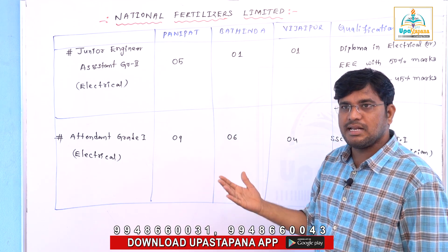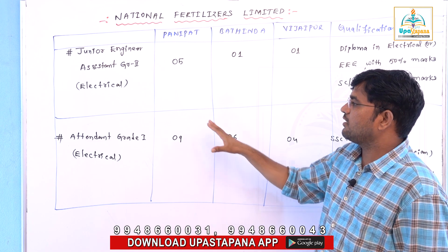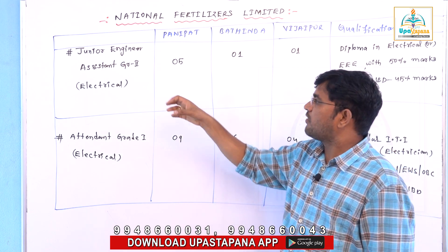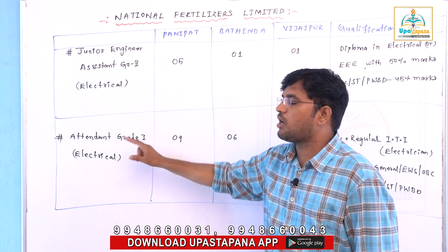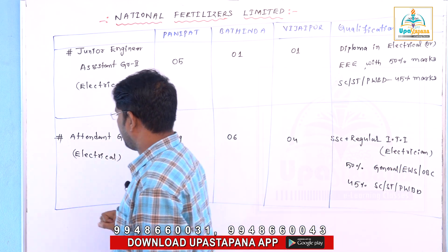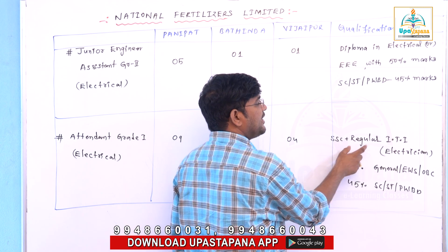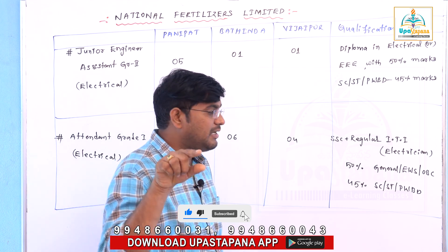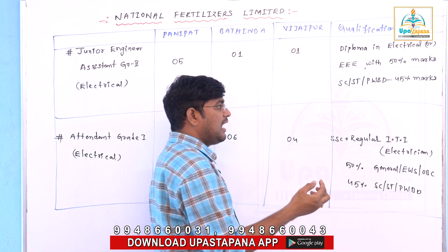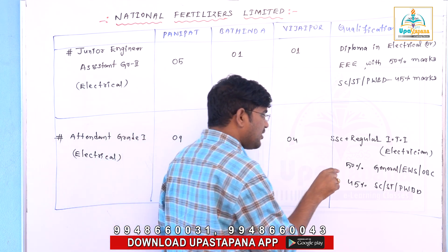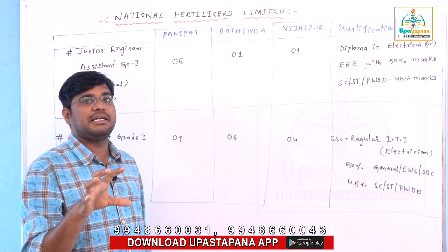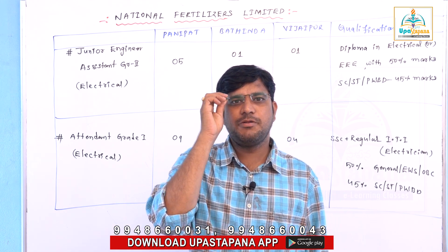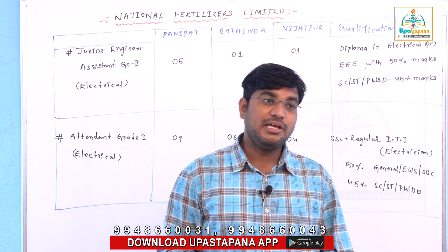There are several other branches like civil and production, but we haven't discussed those because we are providing the course and paper explanation for only these two courses — only these two applications. For Attendant Grade 1, candidates who have completed only regular ITI, or completed SSC along with regular ITI, can fill the application within the ITI.